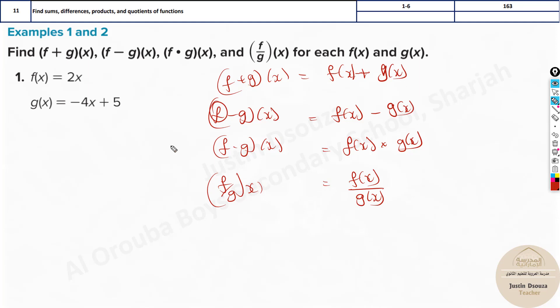Now with this knowledge we will start solving the first one. Here it would be 2x, f of x plus minus 4x plus 5. That would be 2x minus 4x plus 5 or it will be minus 2x plus 5. That's it.